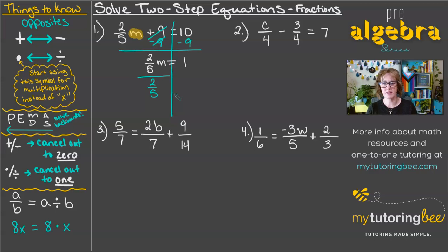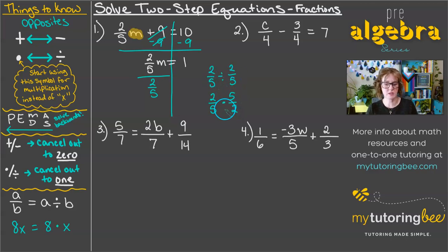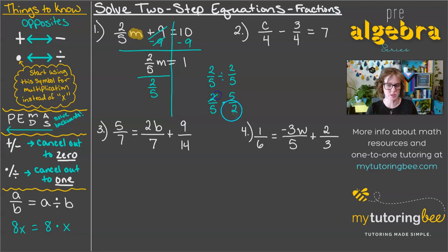Now let's think about that in terms of fractions. What do we know about dividing fractions? If I wanted to do 2/5 divided by 2/5, what are the steps we usually take? A lot of times students will learn keep, change, flip — we're basically turning this into a multiplication problem by multiplying by the reciprocal. We take that second fraction and flip it, and then what happens is that the 2s cancel out and the 5s cancel out. That gives us the coefficient of 1 that we're looking for with m.